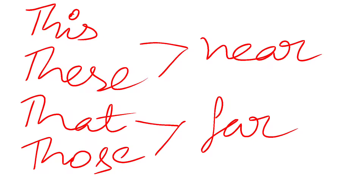So to summarize: 'this' and 'that' are for singular; 'these' and 'those' are for plural. 'This' and 'these' are for things or people that are near to us. 'That' and 'those' are for people or things that are far from us.